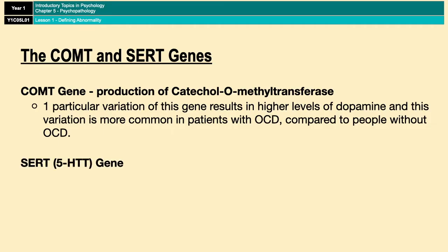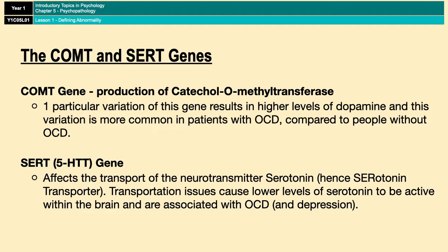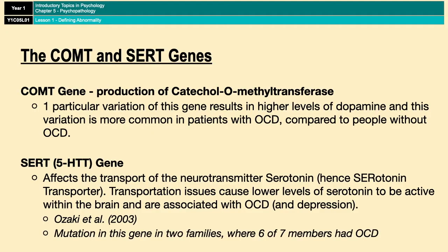The CERT gene, on the other hand, affects the transport of the neurotransmitter serotonin. Issues with the transportation of serotonin result in lower levels of serotonin being active in the brain, and it's these lower levels that are associated with the development of OCD. This was researched by Ozaki et al. in 2003, who found a mutation in this gene across two separate families where seven of eight members had OCD.